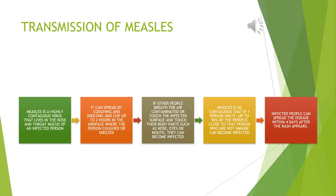Measles is so contagious that if one person has it, up to 90% of the people close to that person who are not immune can become infected. Infected people can spread the disease within four days after the rash appears.